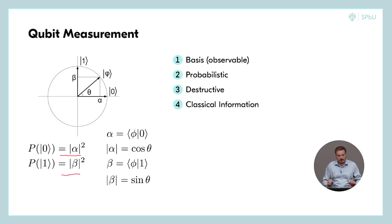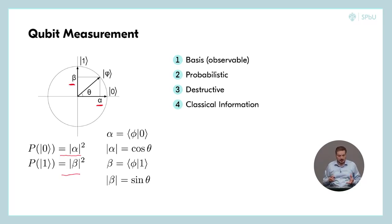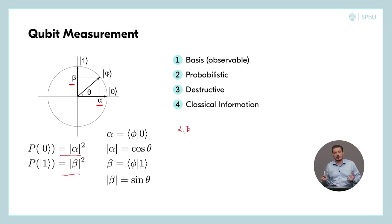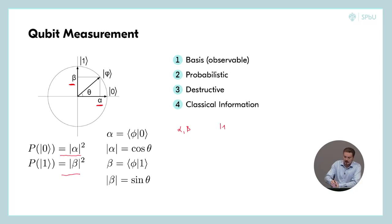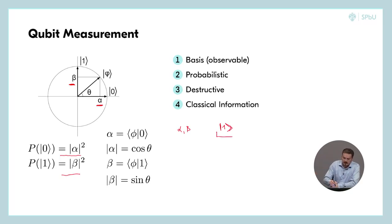Some of you may ask: is there a way to obtain more — actually to obtain the coefficients alpha and beta via the measurement process? Well, if we run measurement once, we obtain only one bit; we don't obtain these two complex values alpha and beta. And if we perform measurement twice, we obtain always the same result — because, for example, if we obtained |1⟩ as the measurement outcome, all subsequent measurements will give |1⟩ again, since the probability of obtaining |1⟩ is one and the probability of obtaining |0⟩ is zero.